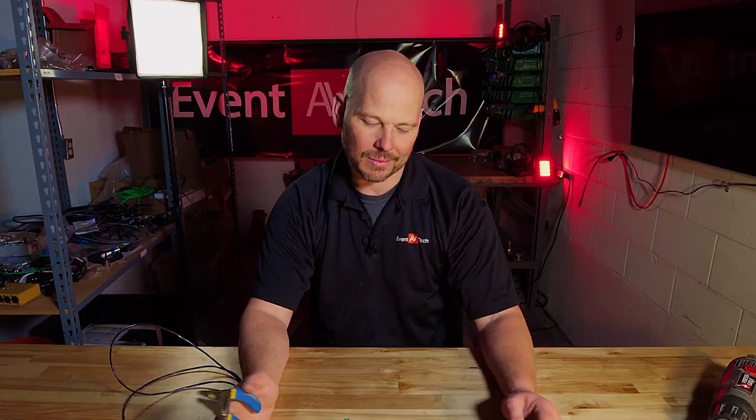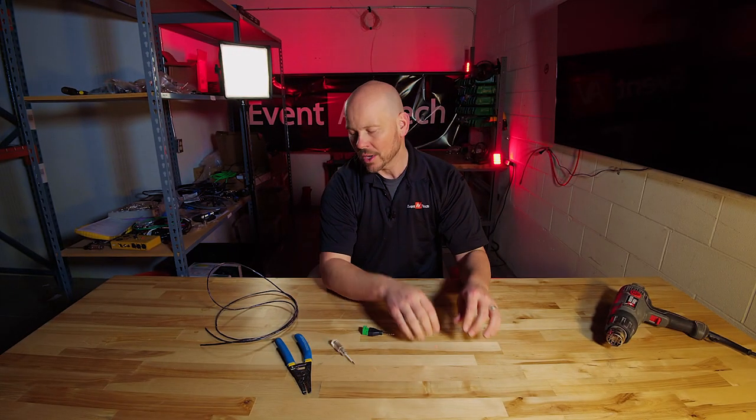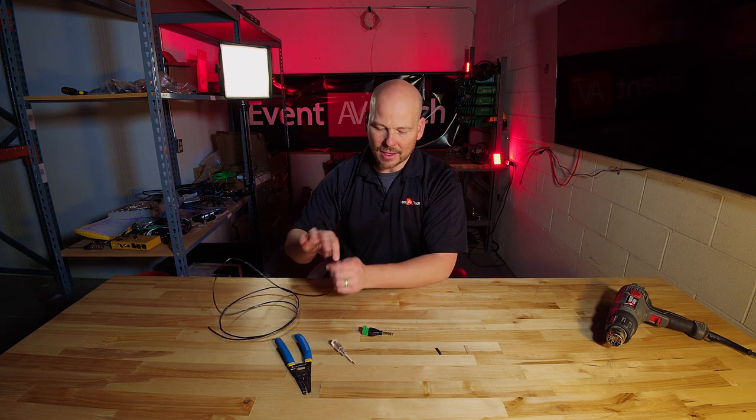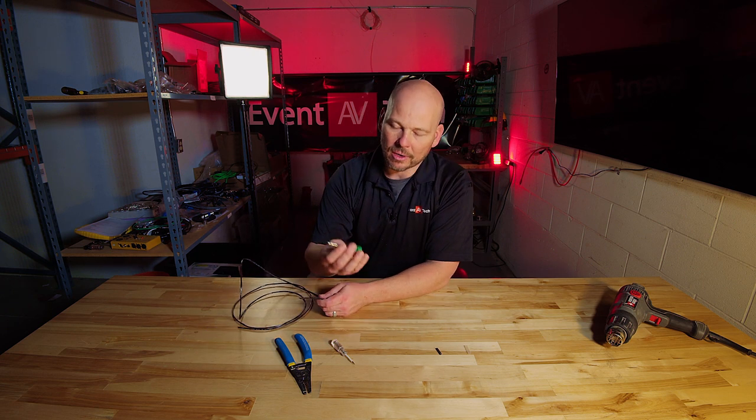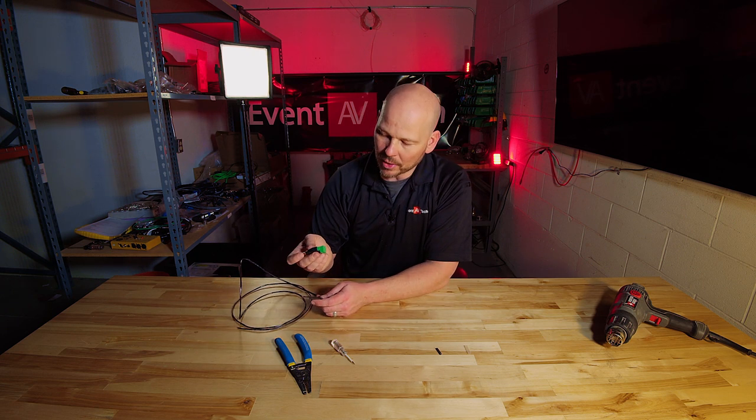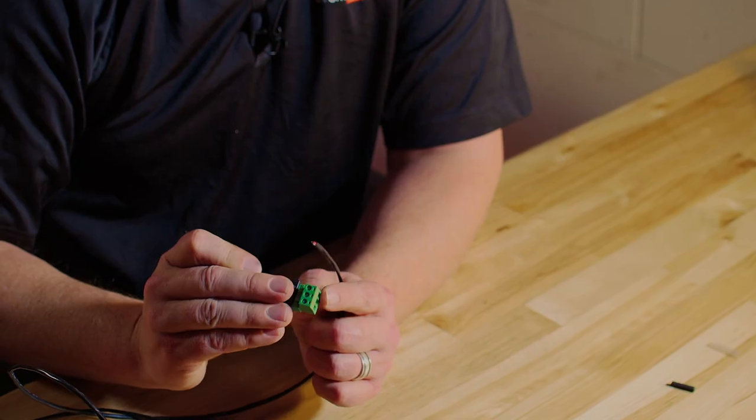But Bruce, we're just doing a captive screw. Why do we need a heat gun? Well, because we are professionals and we use labels and we use heat shrink to make stuff look professional. So we're going to jump right in. This is an audio cable that goes with our audio connector. Once again, not the important part. The important part is the captive screw here.